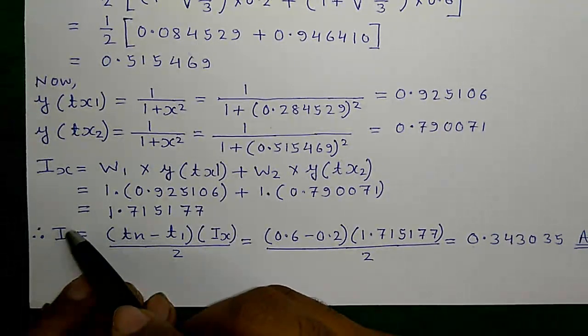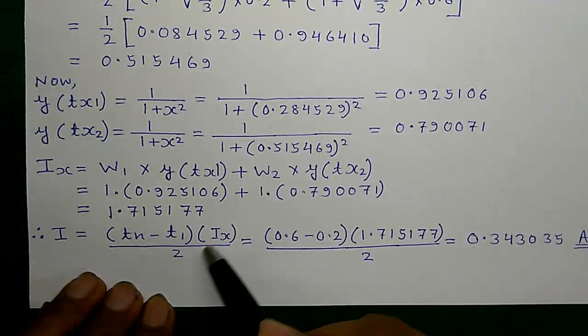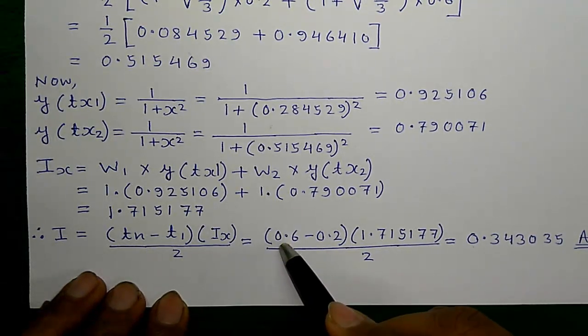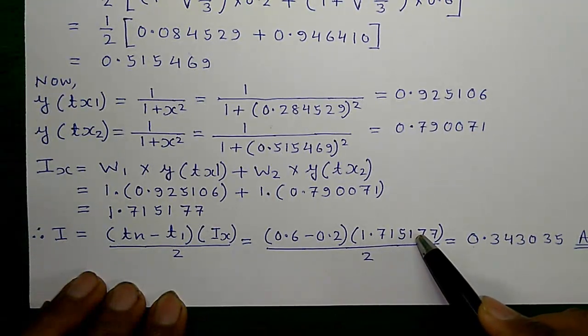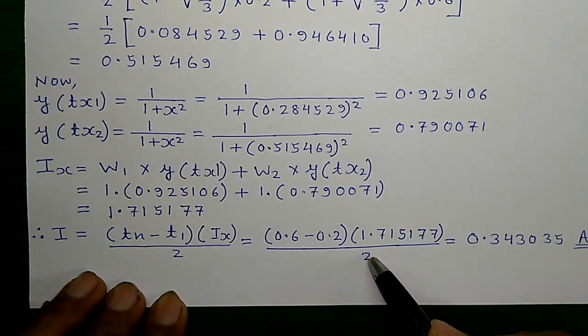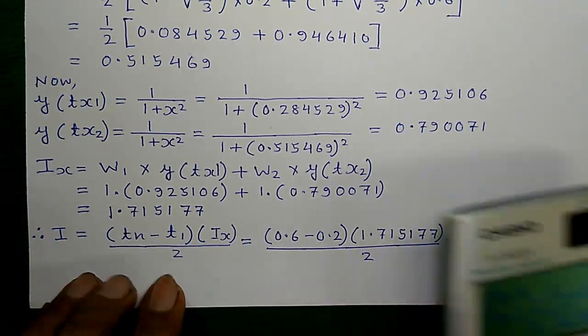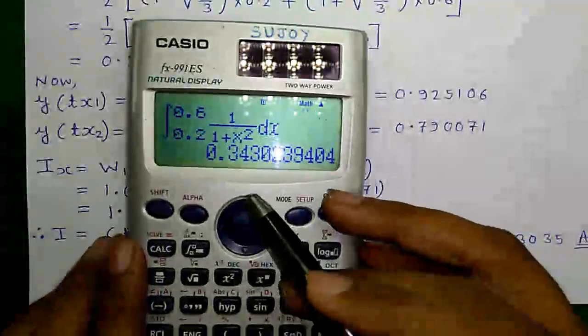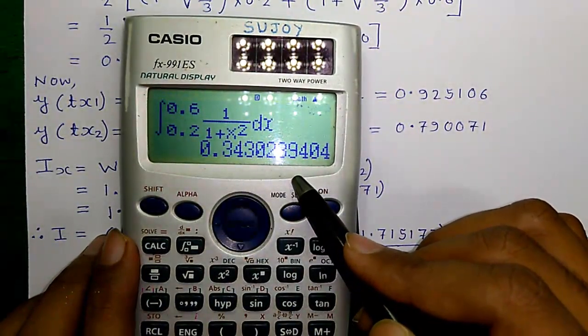Now, we will calculate the actual I. I equals to Tn minus T1 times Ix divided by 2. That is equal to 0.6 minus 0.2 times 1.715177 divided by 2 equals to 0.3430. And which is the value we earlier obtained by solving the integration problem. Isn't it cool?